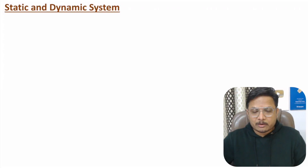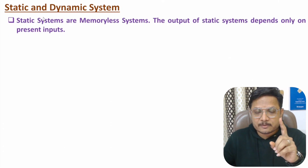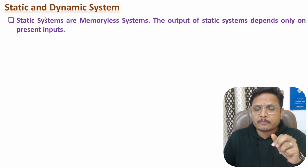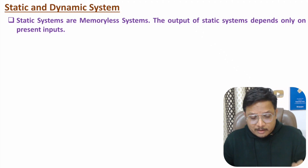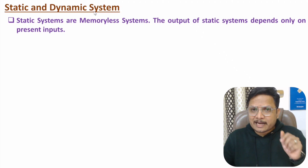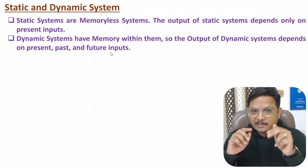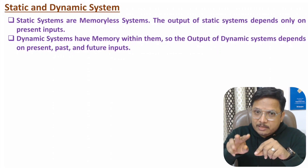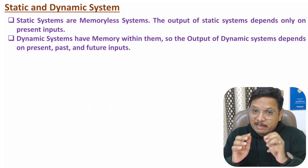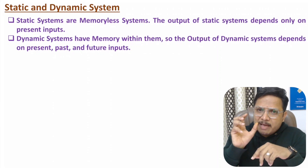Next, I will discuss classification based on static and dynamic systems. Static systems are memoryless systems, meaning the output depends only on the present input. Dynamic systems, on the other hand, have memory, and their output depends on present, past, and future inputs. Dynamic systems are memory systems where memory is associated with the system.